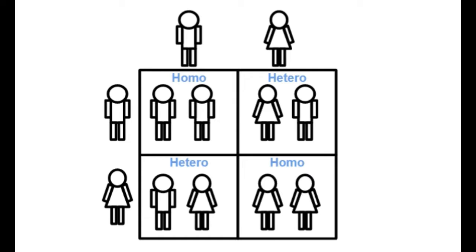The top left being a man and man so they are a homo couple. The top right being a female and man making them a hetero couple. The bottom left is also a hetero couple being that it is a man and a woman and the bottom right is two females making them a homo couple.